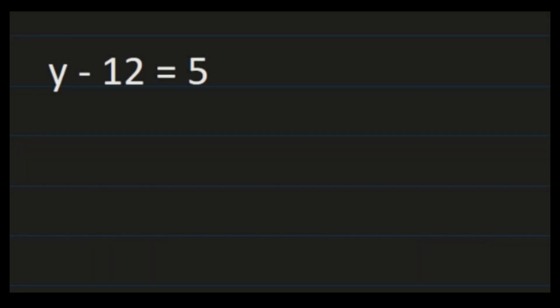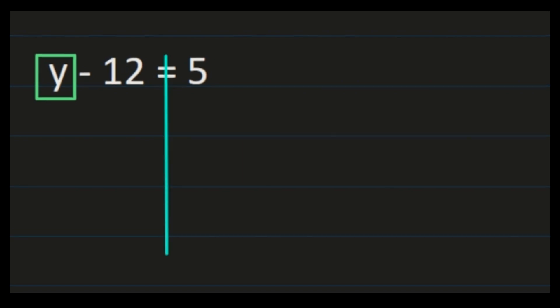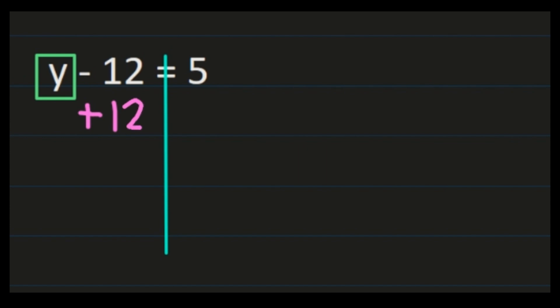For our first example with subtraction, we have y minus 12 equals 5. Our steps are going to remain the same — we need to isolate y, and you may want to put the box around it, and again the line through the equal sign so that whatever you do to the left side you do to the right-hand side. We have y minus 12, so we're going to get y by itself by doing the inverse operation. We're subtracting in our original equation, which means the inverse is to add. We're going to add 12 to both sides because we want to get y by itself, and adding 12 — negative 12 plus 12 is 0 — gets us y by itself on the left-hand side.